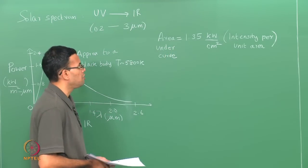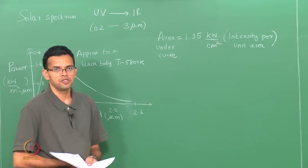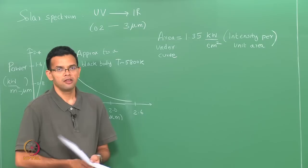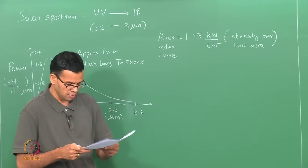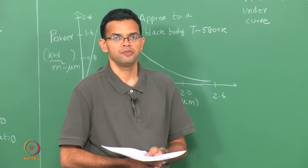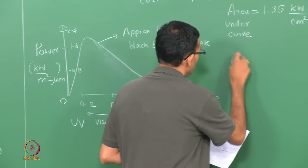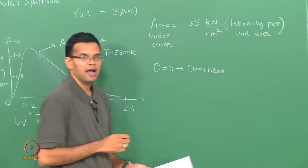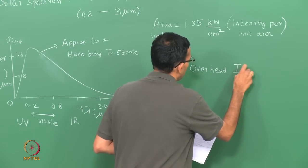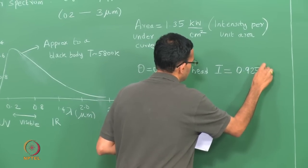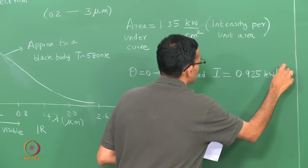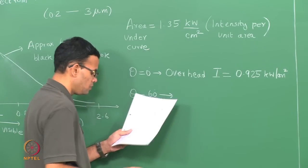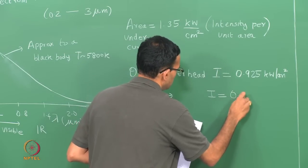We should also take into account the scattering of radiation by the Earth's atmosphere. The atmosphere has ozone and water molecules, as well as dust particles, which can scatter solar radiation. The path length will also change the energy of the spectrum. For example, when solar light is directly overhead (theta = 0), the intensity is around 0.925 kilowatts per square centimeter, and when theta is 60 degrees, there is more scattering and a longer path length, so the intensity is lower at around 0.691 kilowatts per square centimeter.